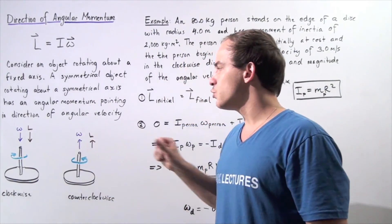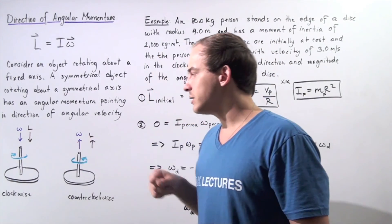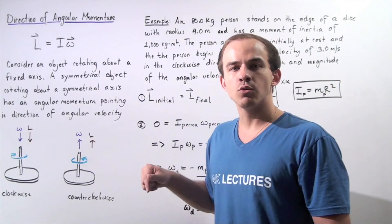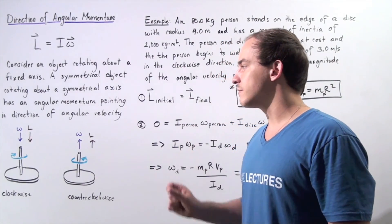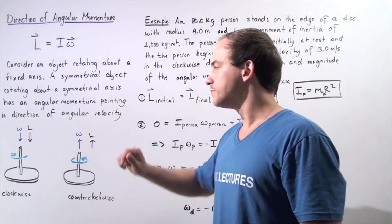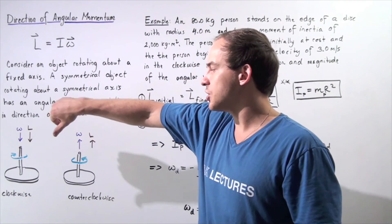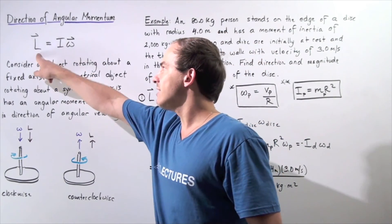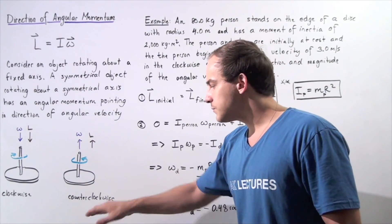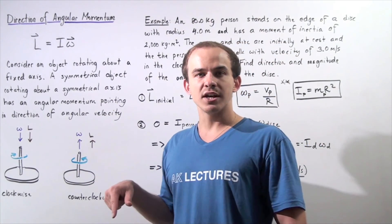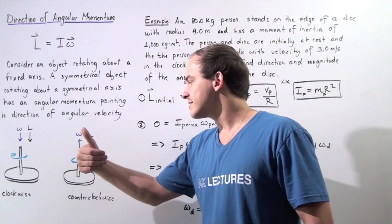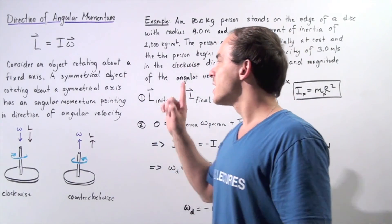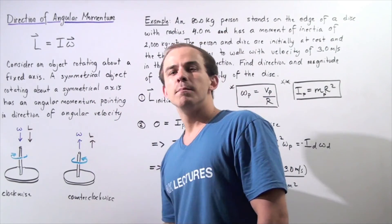Let's suppose we have the following two cases. In case one, we have a symmetrical disk rotating in the clockwise direction, and in case two, it's rotating in the counter-clockwise direction. To find the direction of angular velocity, we apply the right-hand rule: we curl our fingers about the axis of rotation, extend the thumb, and the thumb points downward. So the angular velocity and angular momentum both point downward for case one. If the object is rotating counter-clockwise, we wrap our fingers around the axis of rotation, extend the thumb, and the thumb points upward — so angular velocity and angular momentum point upward.